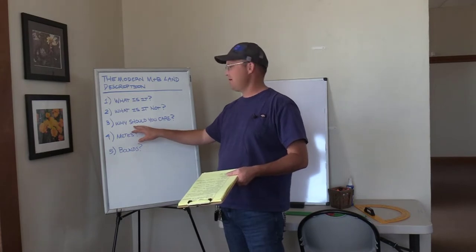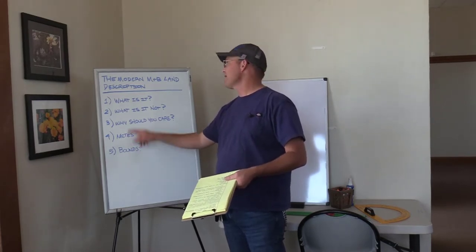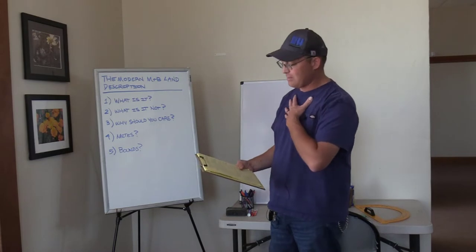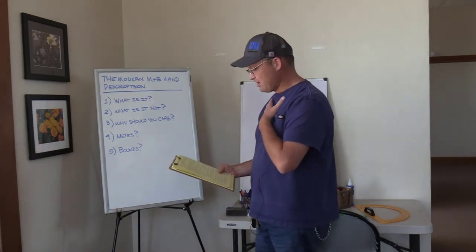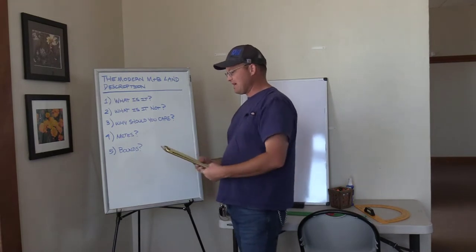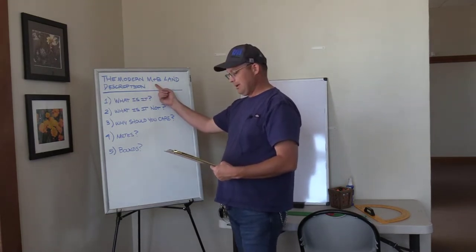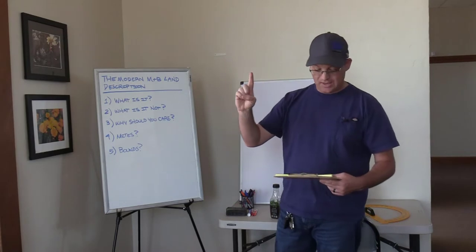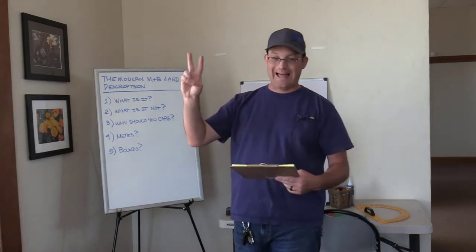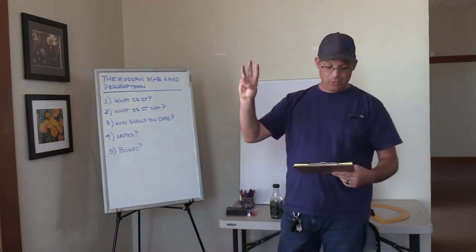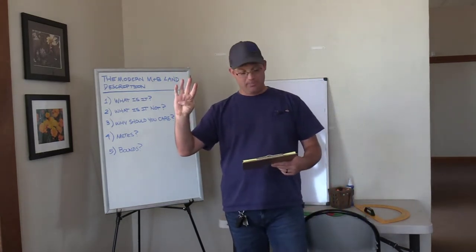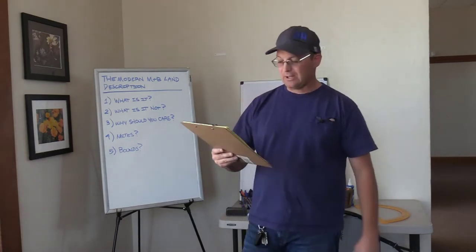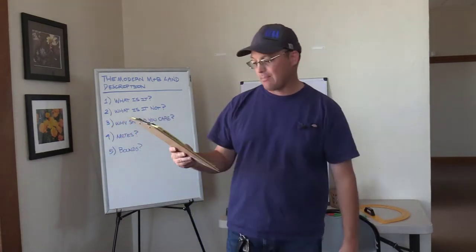Why should you care if you're a boundary surveyor? What are metes? What are bounds? Those are the two parts of a modern metes and bounds land description. Here's the definition: a modern metes and bounds land description is a land description that contains both measurements and controlling calls. Number one, the measurements have the precision of a modern survey. Number two, the description includes a graphical plat. Number three, it's complemented by a closure report. Number four, it doesn't read like a Shakespeare play. Number five, it's based on a good boundary survey. And number six, it properly conveys the intent to the retracing boundary surveyor.